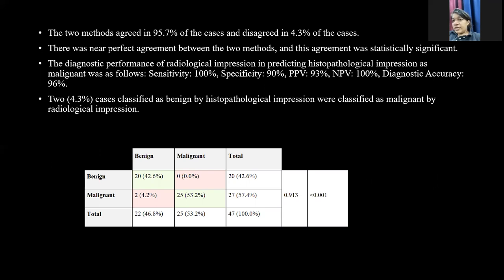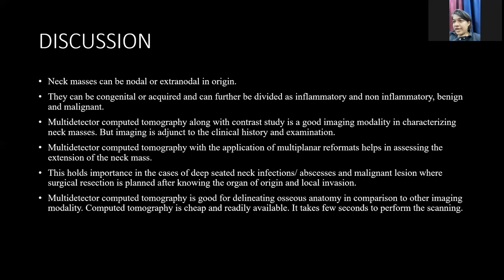There was perfect agreement between the two methods and this agreement was statistically significant. The sensitivity was 100% with specificity of 90%, positive predictive value of 93%, negative predictive value of 100%, and diagnostic accuracy of 96%. Two cases classified as benign by histopathological impression were classified as malignant by radiological impression. Neck masses can be nodal or extranodal, congenital or acquired, and further divided as inflammatory, non-inflammatory, benign, or malignant. Multidetector computed tomography with contrast is a good imaging modality for characterization of neck masses. With the help of multiplanar reformats, detection and delineation of the extent of neck masses on MDCT has become easier. MDCT is good for delineating soft tissue anatomy in comparison to other modalities, and moreover it is cheap and readily available.